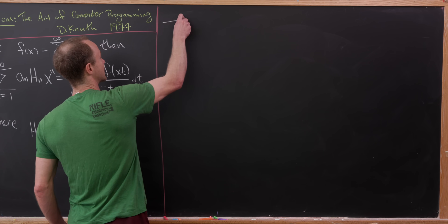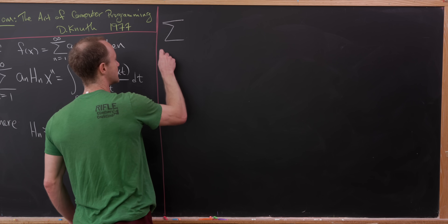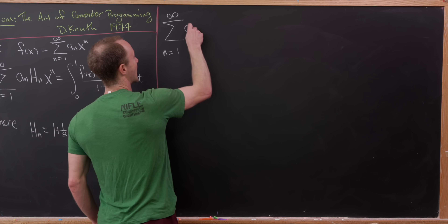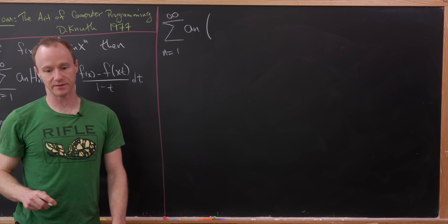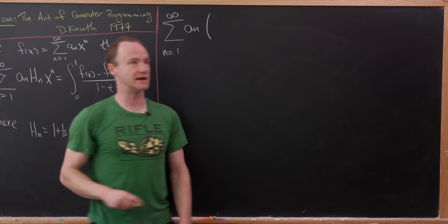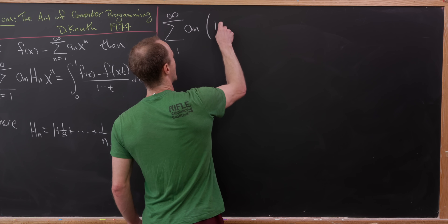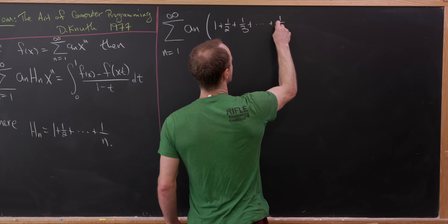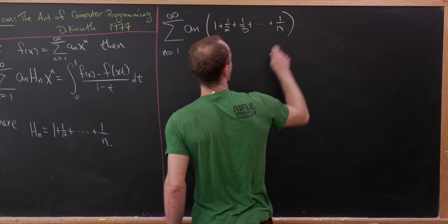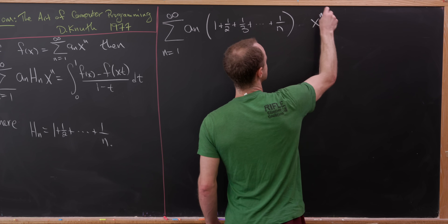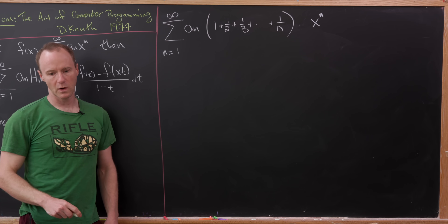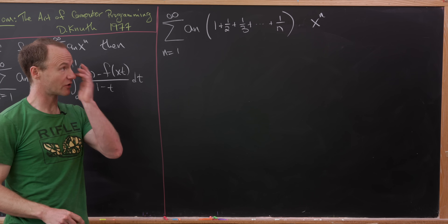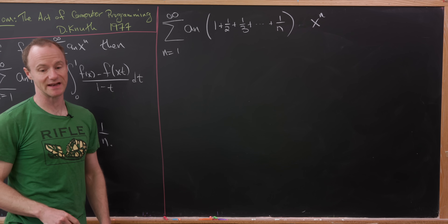Let's build this identity and then look at a nice application. Starting with the left-hand side, I've got the sum as n goes from 1 to infinity of a_n. Instead of writing h_n, I'll write out what it is: 1 plus 1/2 plus 1/3 up to 1/n, multiplied by x to the n. Now, where to go from there? I'd like to make this look like the evaluation of some certain integral.